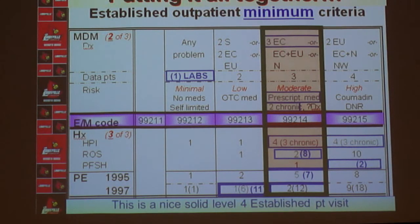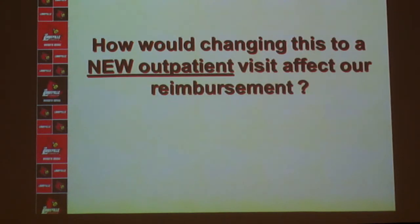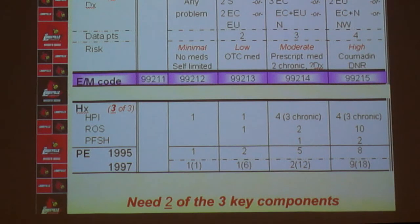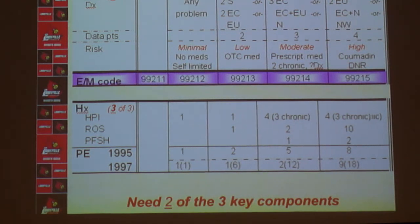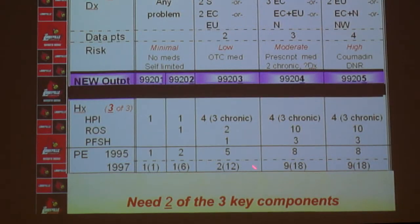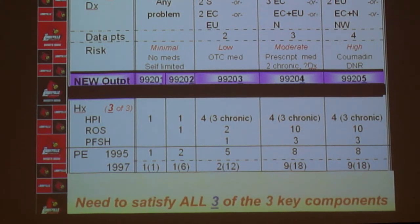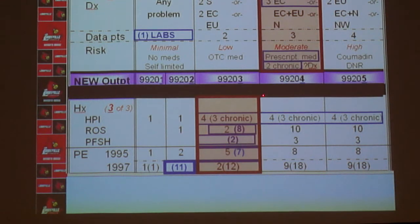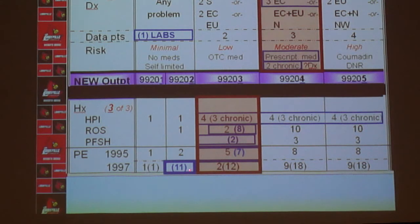Now let's take the same patient and make him new to the practice. The medical decision-making component is identical, but for history, the documentation requirement is one level higher — the history needed for a Level 4 new patient is what would have been needed for Level 5 established. Additionally, all three key components must be satisfied. With the same documentation, history only satisfies Level 3 criteria for a new patient — falling short on review of systems and missing a family history. Physical exam also falls short at Level 3 under 1995 guidelines, and would audit to only Level 2 under 1997.